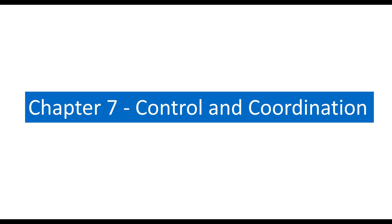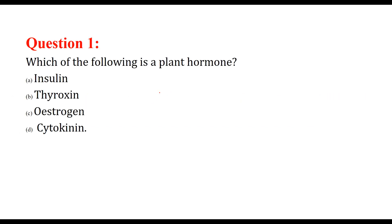We are looking at chapter number 7, which is Control and Coordination — question and answer on control and coordination. In our body, whether it may be an animal or a plant, there has to be some coordination between different parts: like leaves and stem in plants, or brain, body, skin, and different organs in animals — how they are controlled and how they coordinate. This is the basis of these question answers.